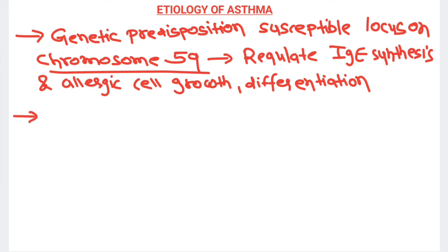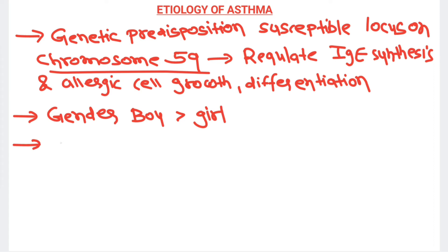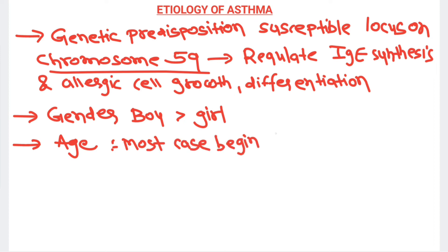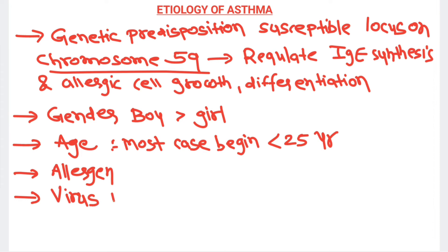Asthma is commonly seen in boys compared to girls, so gender predilection is present. The usual age for developing asthma is less than 25 years — most cases begin before 25 years of age. Allergens such as house dust or pollen are responsible, viral infection is also responsible, and smoking is one of the causes of asthma.